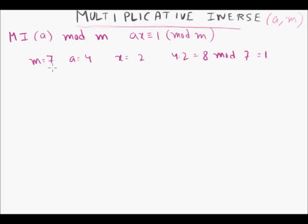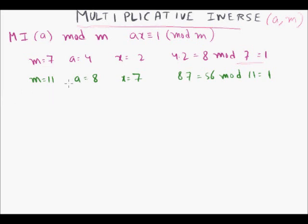For example, if m = 7 and a = 4, the multiplicative inverse of 4 modulo 7 is 2, because 4 × 2 = 8 and 8 mod 7 = 1. Similarly, if m = 11 and a = 8, the multiplicative inverse is 7, because 8 × 7 = 56 and 56 mod 11 = 1.